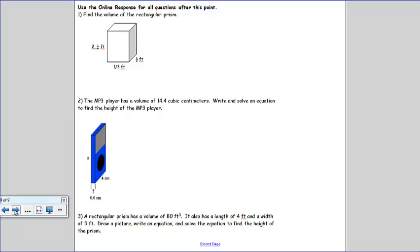On the back, you have your on-your-own responses. Number one is a rectangular prism. Remember to write your formula first. Number two is also a rectangular prism, but this one is like example two, where you're finding the missing height. Number three, notice that it says to draw a picture, write an equation, and solve the equation to find the height of the prism. The picture will really help you find the answer to that one.